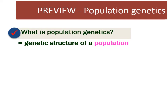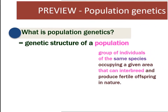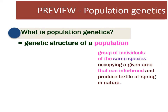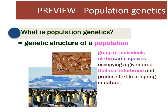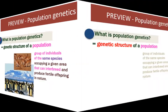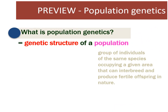It is about the genetic composition of a group of individuals that make up a population. Population is defined as a group of individuals of the same species occupying a given area that can interbreed and produce fertile offspring in nature. Genetic structure refers to the genotypes and alleles of all the individuals that make up the population.